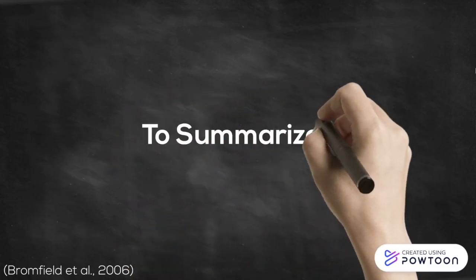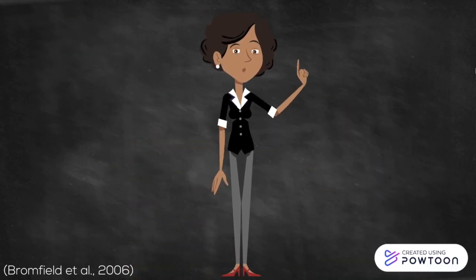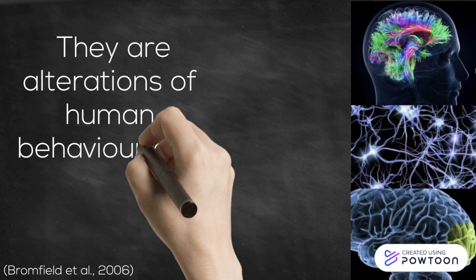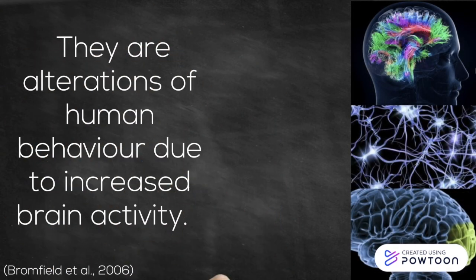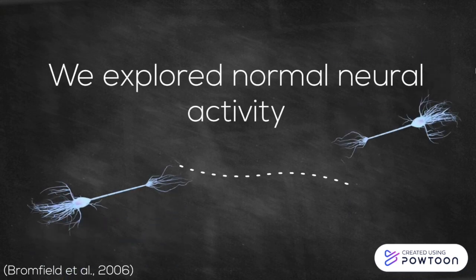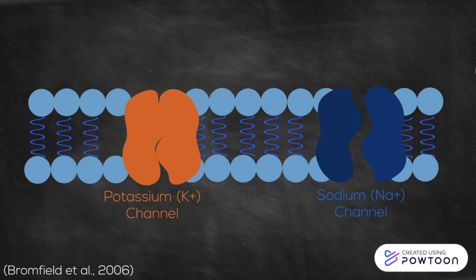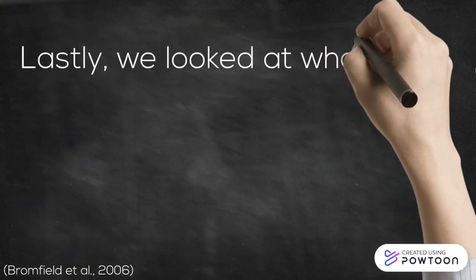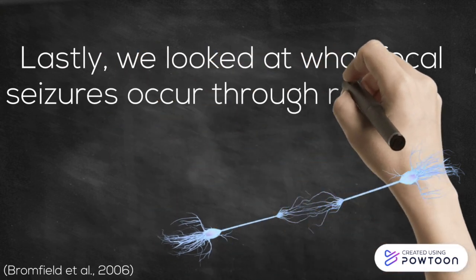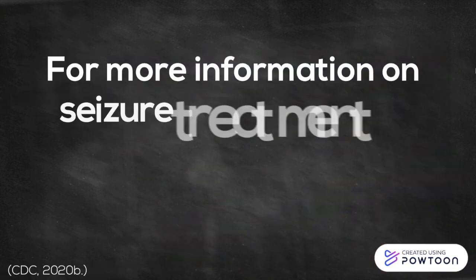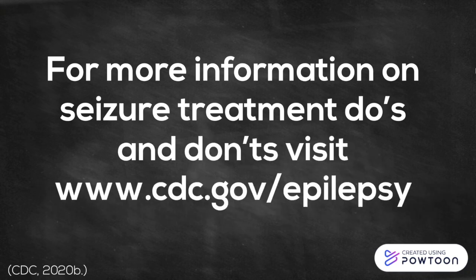To summarize, today we looked at what seizures are, which are alterations of human behavior due to increased brain activity. Then we explored normal neural activity and how action potentials are propagated through the opening and closing of sodium and potassium channels. Lastly, we saw how focal seizures occur through repeated action potentials. For more information on the do's and don'ts of seizure treatment, please visit the official Centers for Disease Control's website.